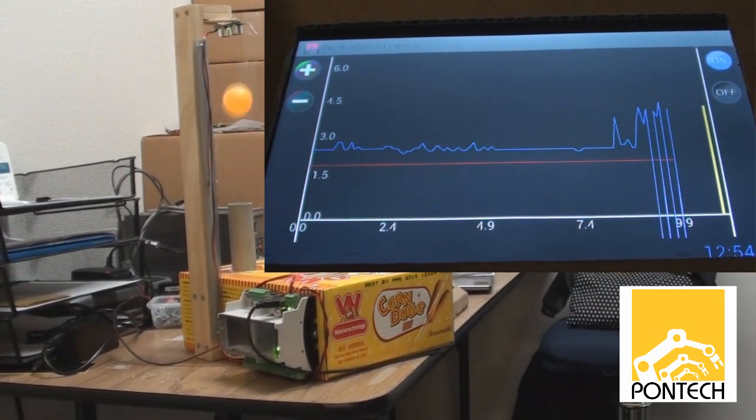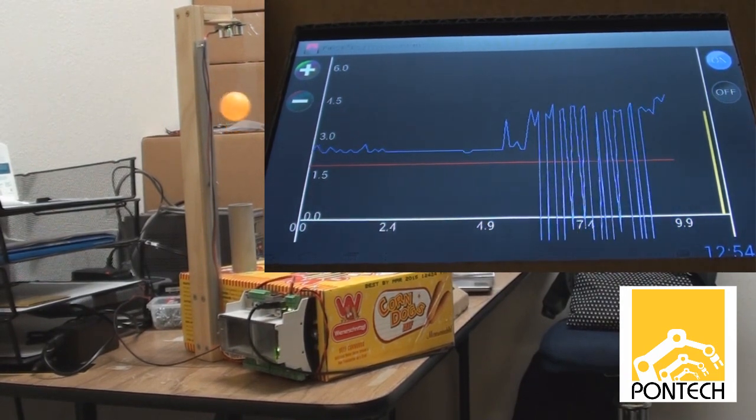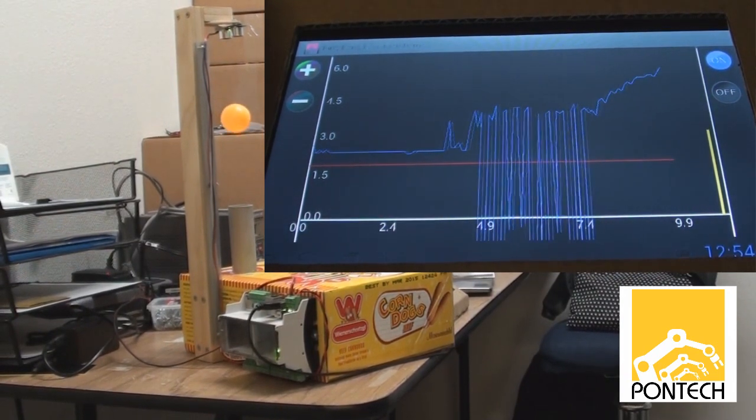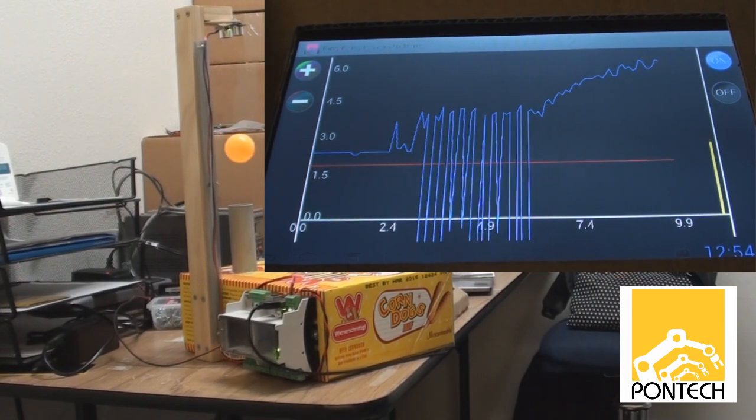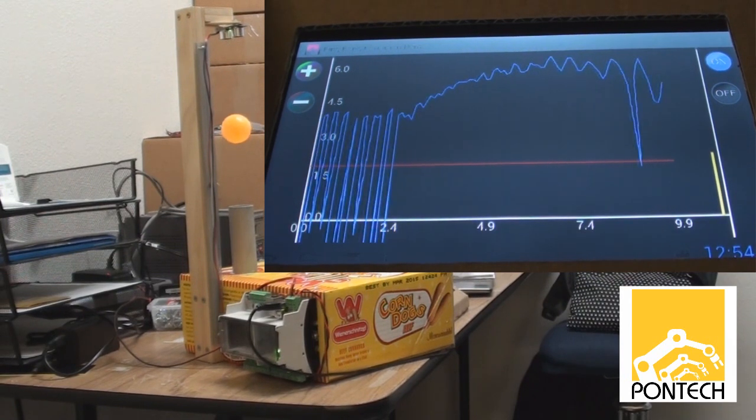So when the white ball is replaced with the orange ball, the orange ball shoots up due to the higher fan speed, and the PID loop begins to control and slow the speed of the fan until the orange ball is lowered to the previous height that the white ball was levitating at.